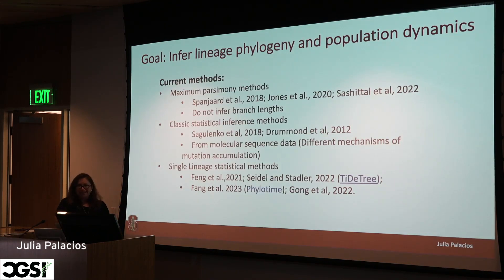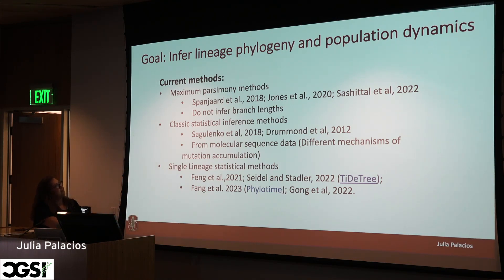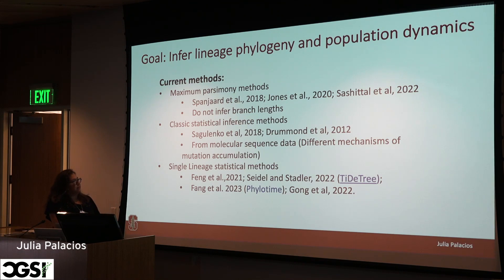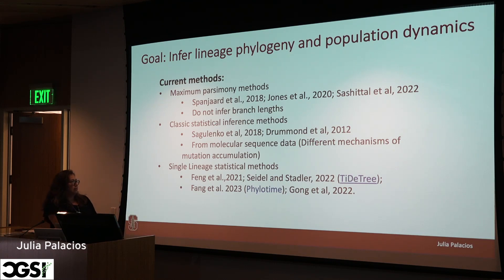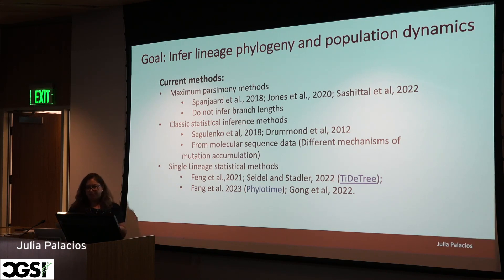We are not the first ones excited about this — many people have been working on it, and there was a talk yesterday by Ben Raphael. There is a class of methods based on parsimony ideas, some based on standard phylogenetic models (though the mutation mechanism doesn't match natural processes exactly), and some recent probabilistic methods very similar to the one I'll talk about today, with slight differences I can describe later.